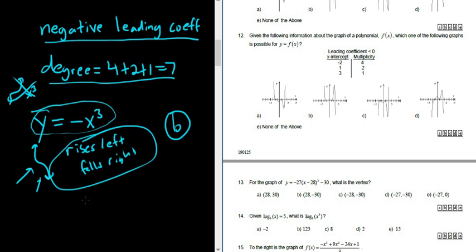This is called the leading coefficient test. It's used to describe this stuff here. This is called end behavior. That's what this is called, end behavior. But another function you can think of besides negative x cubed is negative x, that looks like that. So you could also think of that one. So if you memorize the basic functions, you can answer these questions pretty easily.